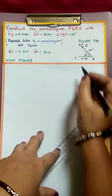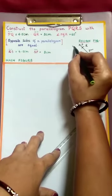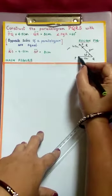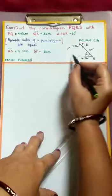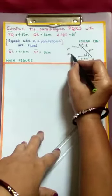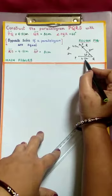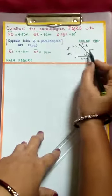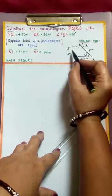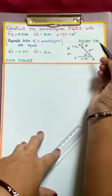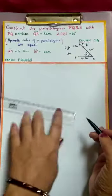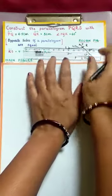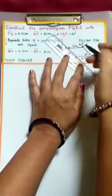Next, with R as center, taking 4.5 cm radius, draw an arc. With P as center, 3 cm radius, cut this previous arc. When it is 4.5 cm, the opposite side is also 4.5 cm — these two are opposite sides and they are equal. These two arcs intersect at S. We have to join RS and PS. So this is your parallelogram.